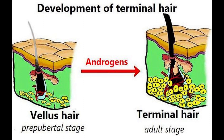How much of each hair type you have varies from person to person and also depends on your age and sex. Children's bodies mostly have vellus hair, for instance. About 30 percent of the body surface is covered with terminal hair in women, compared to about 90 percent in men.